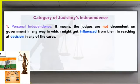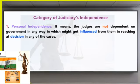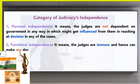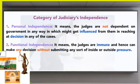The categories of judges' independence are as follows. First: personal independence — it means the judges are not dependent on the government in any way that might influence them in reaching a decision in any case. Second: functional independence — it means the judges are immune and can make any decision without submitting to incidents of outside pressure.